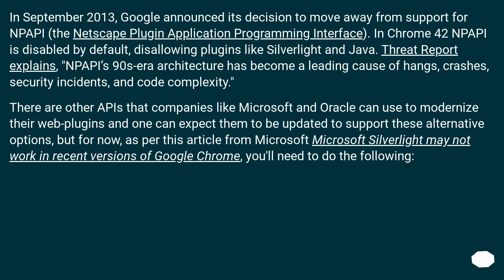The Threat Report explains that NPAPI's in-process architecture has become a leading cause of hangs, crashes, security incidents, and code complexity. There are other APIs that companies like Microsoft and Oracle can use to modernize their web plugins, and one can expect them to be updated to support these alternative options. But for now, as per this article from Microsoft, Silverlight may not work in recent versions of Google Chrome — you'll need to do the following.